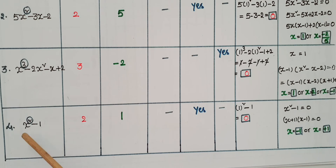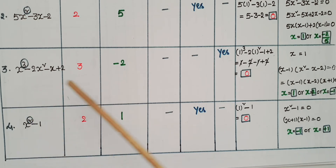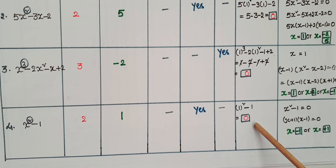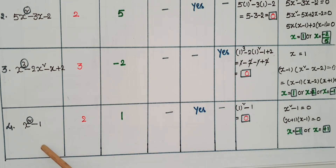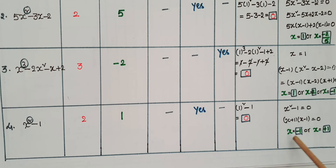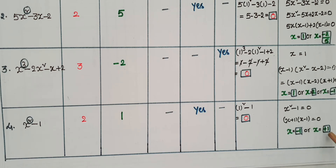The next example is x square minus 1. The variable is x and the highest power is 2, so the degree is 2 and the coefficient of x square is 1. It is a quadratic polynomial. The value when x equals 1 is 0, so x equals 1 is a zero of this polynomial. x square minus 1 can be written as (x plus 1)(x minus 1), so the zeros are x equals minus 1 or x equals 1.